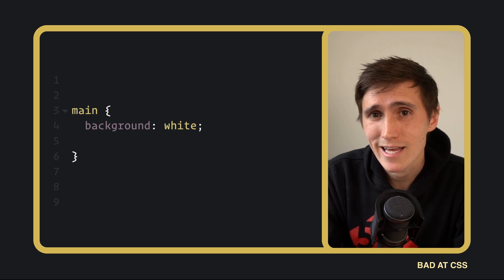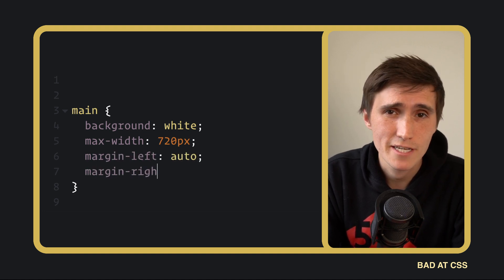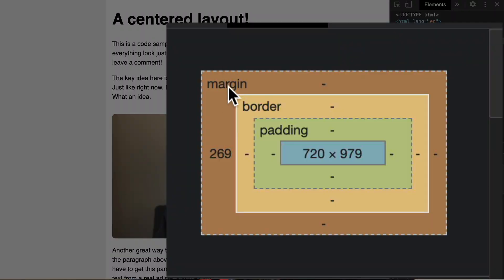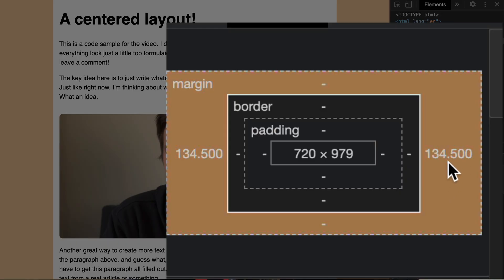One of the most common layouts on the web is just centering things. The tried and true way of achieving this is by setting an explicit width on the containing element and applying auto margin to the left and right sides. The auto value is hungry — it's going to fill up as much space as it can. So setting auto margins on both sides will take up an even amount of space, therefore centering the element. It's kind of like a nice and cozy way to tuck an element in with some margin.